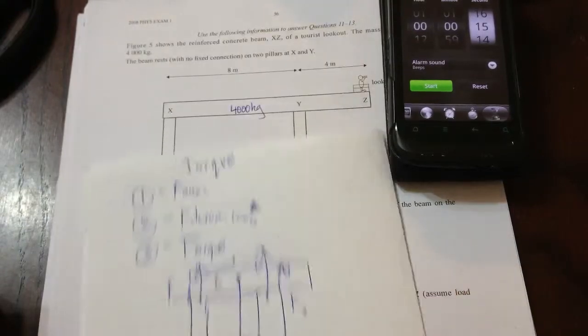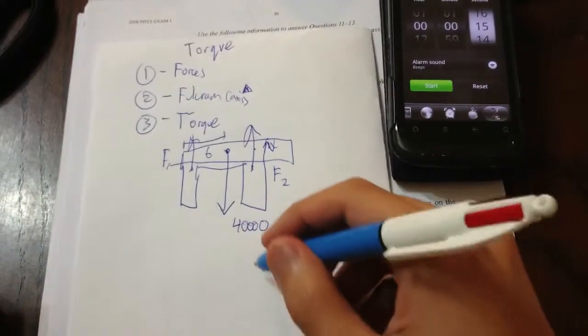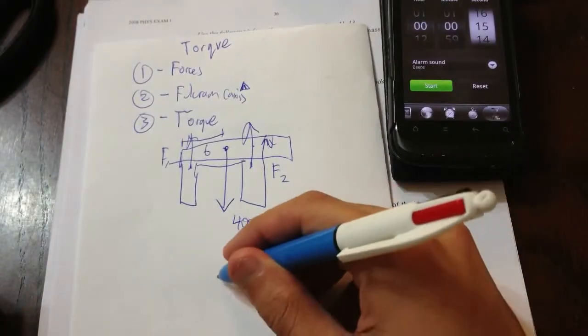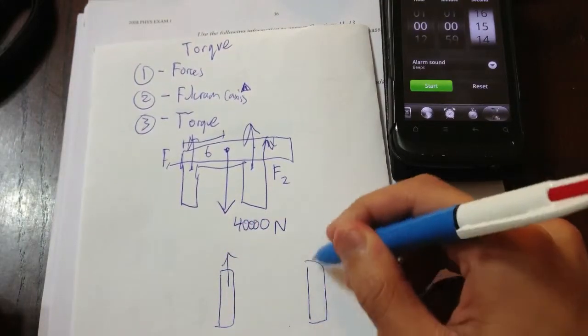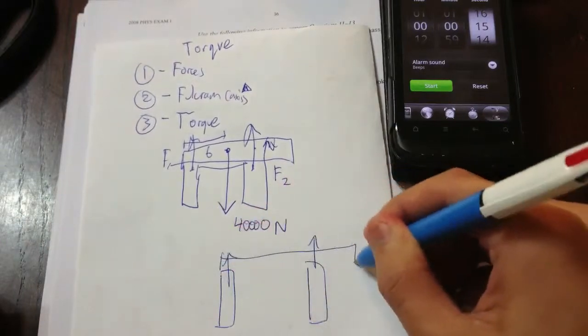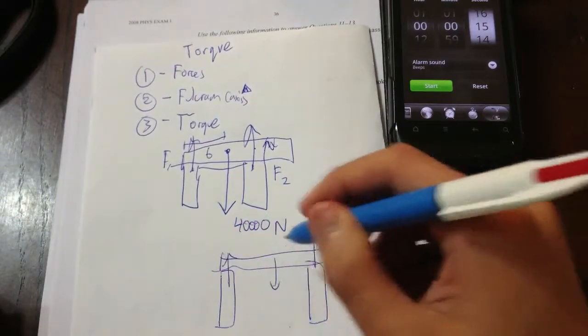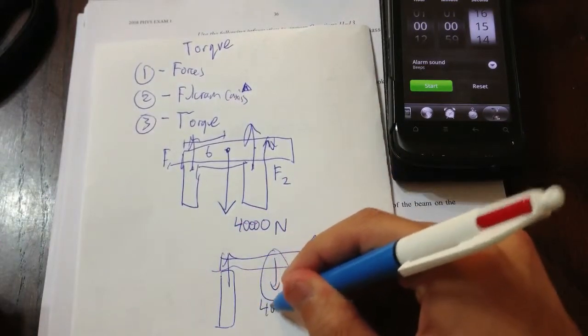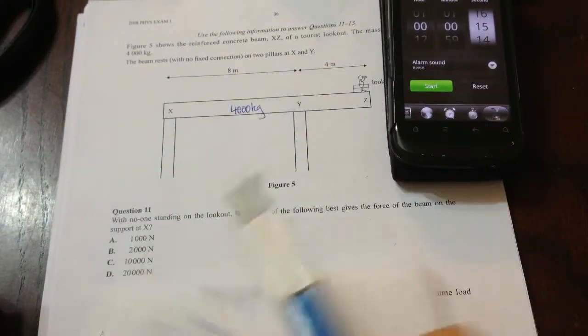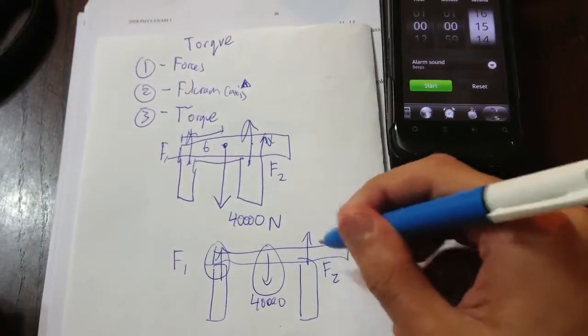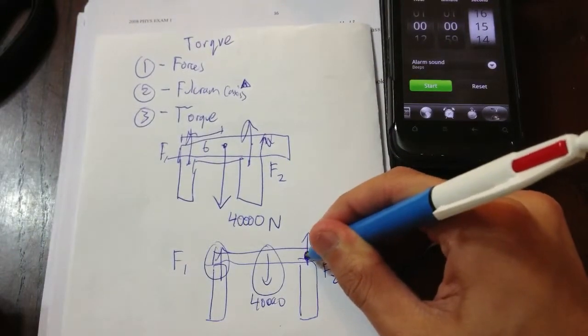So, the fulcrum to choose, remember, I said, whatever point or axis we choose, the forces there don't come into our equation. So, considering that, we know this force going down. We want this force going up, F1, because that's what the question asks. We don't know what F2 is, and we don't care what it is. So, let's choose the axis to be in there.